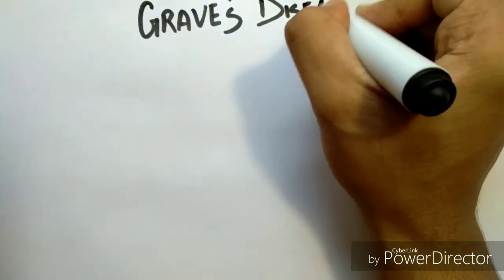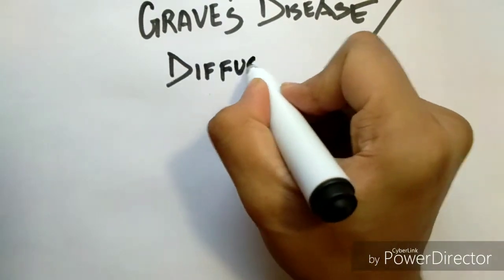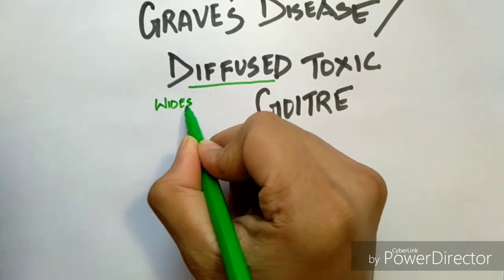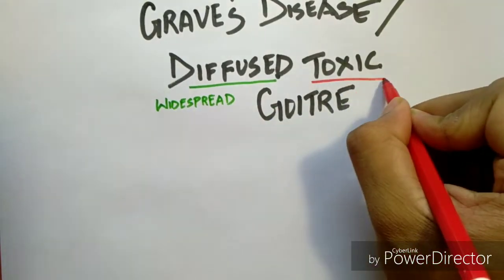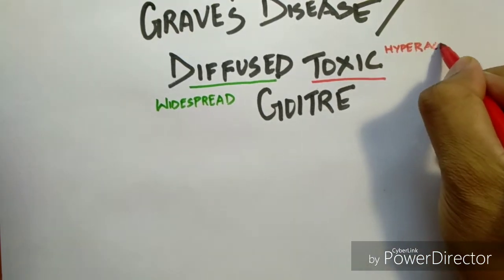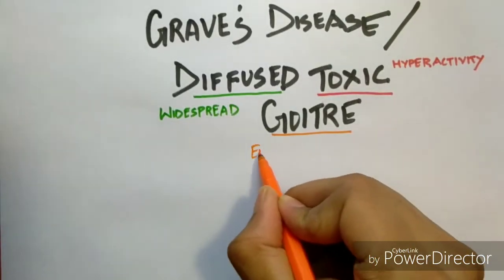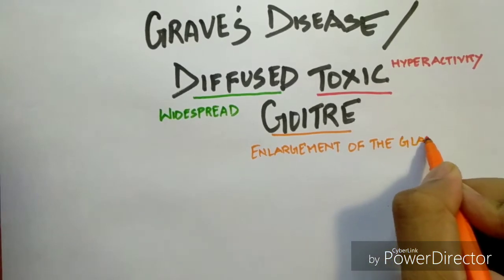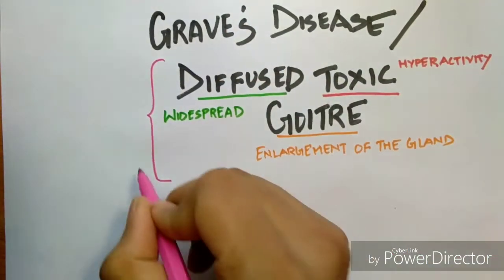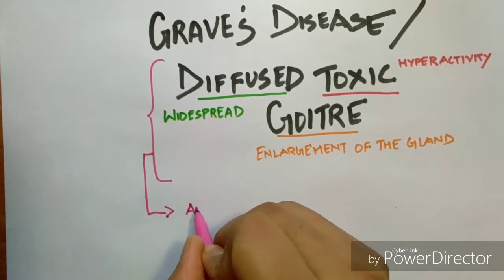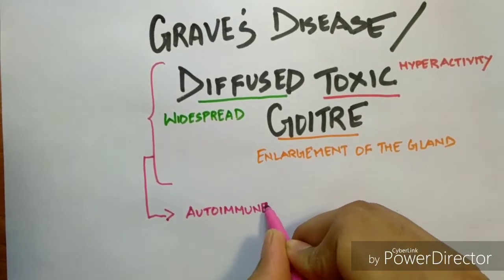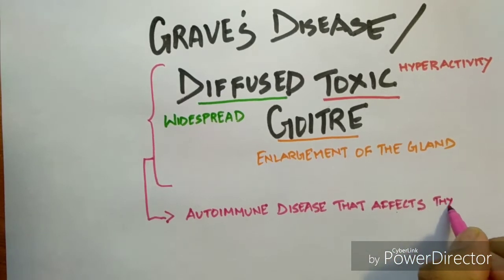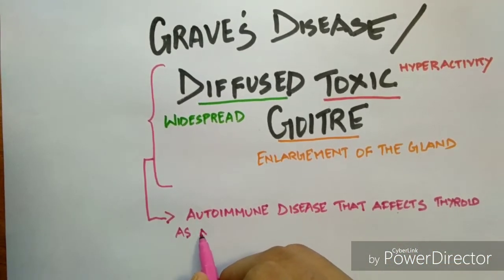Hey guys, back with another video. The topic of discussion for today is Graves disease, also known as diffuse toxic goiter. When we separate the words, diffuse means widespread, toxic means hyperactivity, and goiter is enlargement of the thyroid gland which results in swelling of the neck. When we define the term altogether, we can say that it's an autoimmune disease that affects the thyroid as antibody complexes are formed, which results in toxicity as there is overactivity of the thyroid gland.